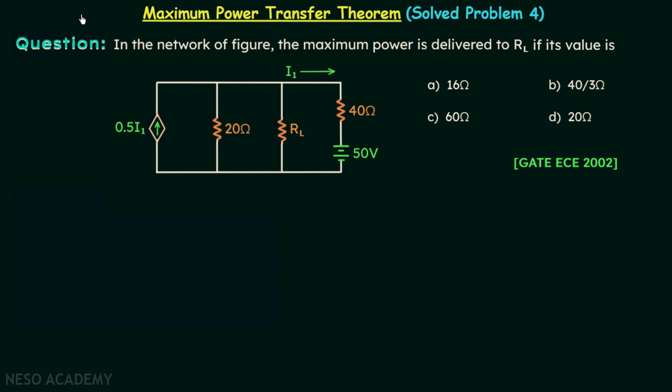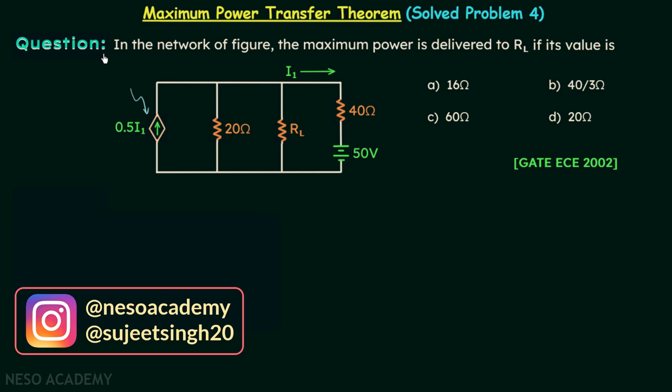In this lecture, we are going to solve problem number four on Maximum Power Transfer Theorem. In this problem, the network has one dependent source present. The question asks: in the network of the figure, the maximum power is delivered to RL if its value is. We have four options and need to choose the correct one.